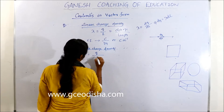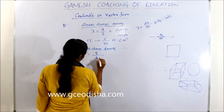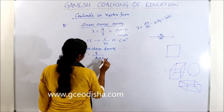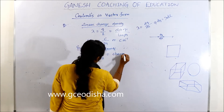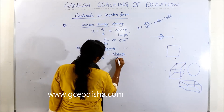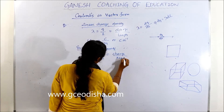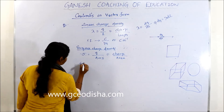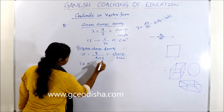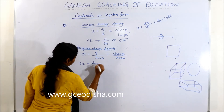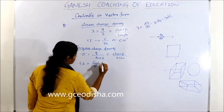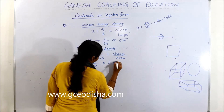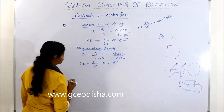For surface charge density, the symbol used is sigma. The area can be represented as A or S. It is defined as charge by area. The SI unit is coulomb per meter squared, or coulomb meter to the power minus 2.